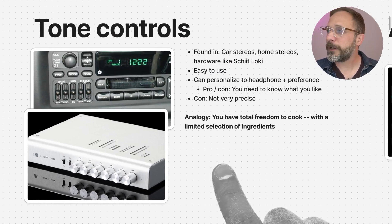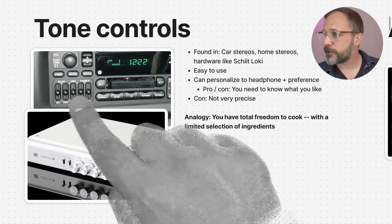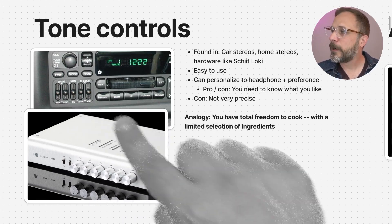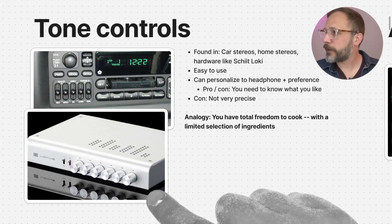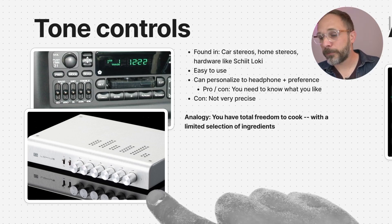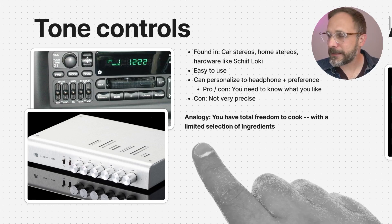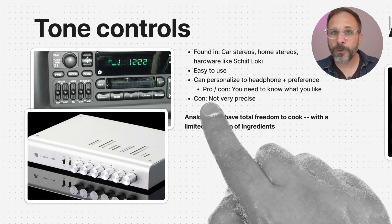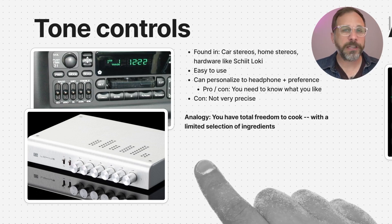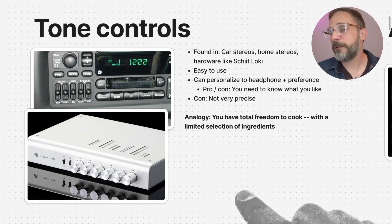Our next form of EQ is also fairly common and actually kind of useful — tone controls. By this I mean knobs and sliders that let you adjust the bass, mids, and treble. You might see these on a car stereo, your home stereo, or on audiophile equipment like the Schiit Loki. What's nice about these is they're easy to use — no software involved, just hardware — and you can still personalize it to your own headphone and preferences. Maybe a pro or con is that you do have to know what your preferences are. The biggest con is that tone controls are just not very precise — you only get maybe two or five sliders. My analogy: you get to cook whatever you want, but you only have a set number of ingredients. Tone controls are pretty good, but pretty limited.